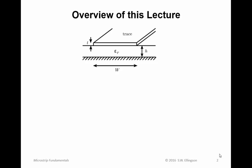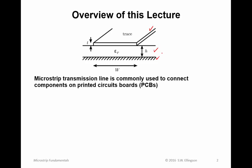I'm showing you a diagram of what I mean by microstrip. It consists of some metal trace on top of some dielectric slab, which itself is on top of a ground plane. Microstrip transmission line is commonly used to connect components on printed circuit boards, or PCBs.